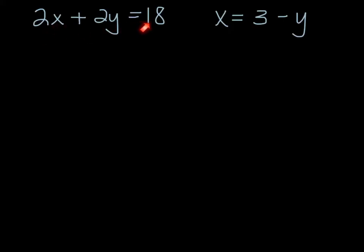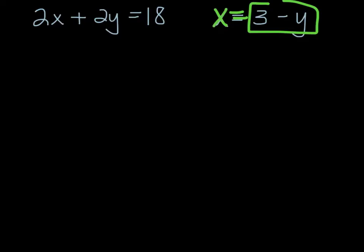We have another system of equations and we want to find what point the lines have in common. I see 2x plus 2y equals 18, and the other equation has x equals something. Whenever you see x equals something or y equals something, it's a good candidate for substitution, because you know exactly what x equals. So I'm going to take that value and plug it in where x appears in the first equation.